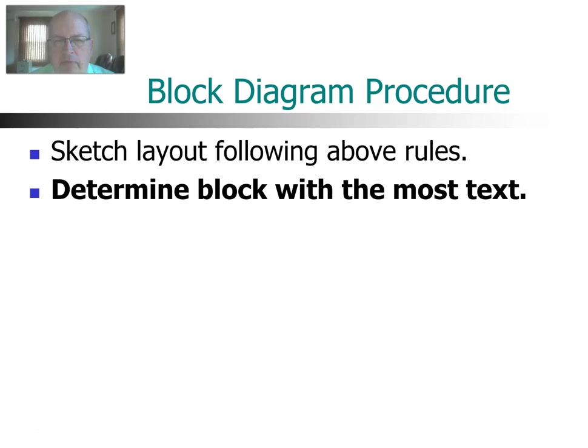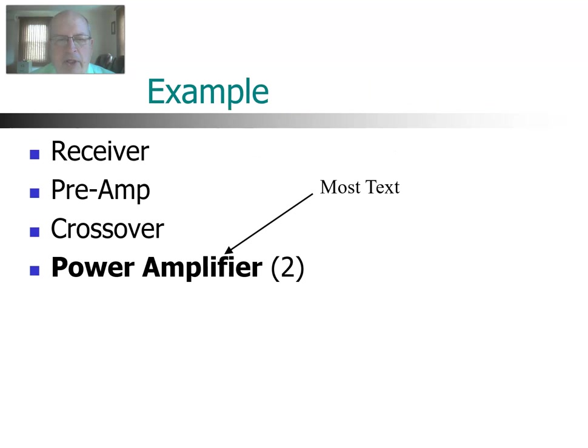All right, so now that you have your sketch of your block diagram and what you want to construct, you want to look at each of the blocks and look at the titles that you want to have in each block and pick out the title that has the most text, in other words, the most number of letters in the title of the block. So in our example, the block with the label Power Amplifier has the most letters, and there will be two of those, but we'll just pick out one of them. It doesn't matter which one since they're both the same.